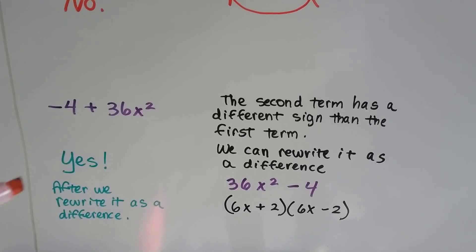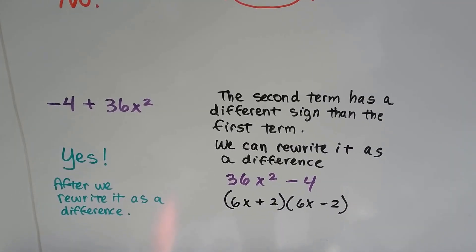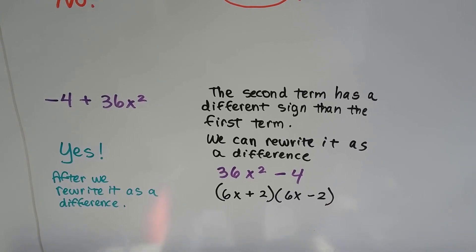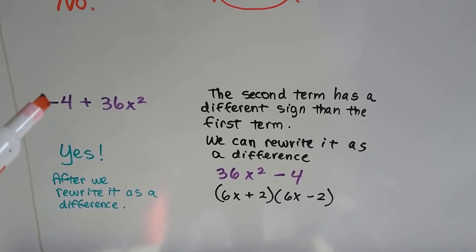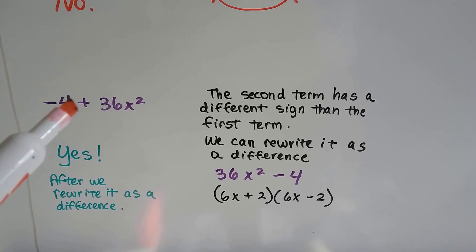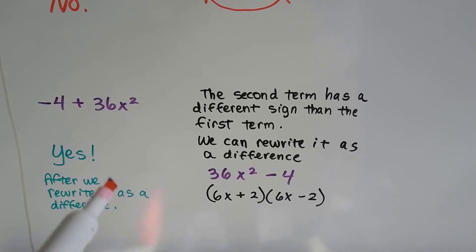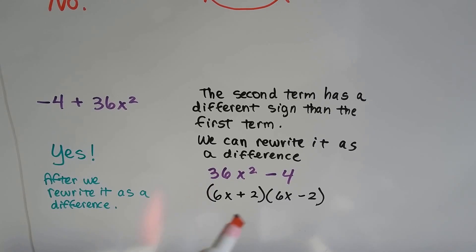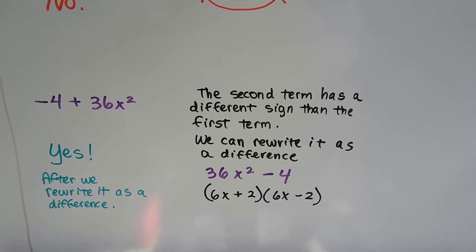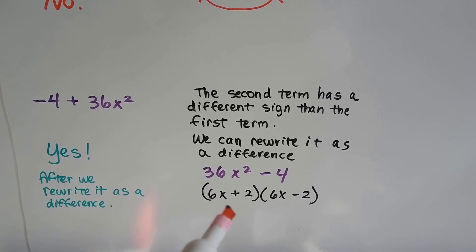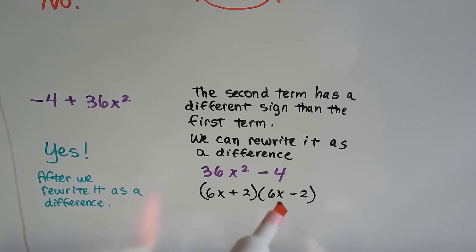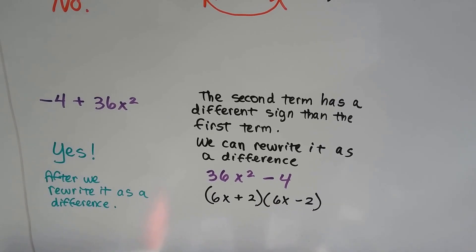Well, now we've got a negative 4 plus 36x squared. Yes, we're going to rewrite it as a difference. So if you have a negative 4 and you're adding 36x squared, we can flip it around to be 36x squared minus 4. That'll give us 6x plus 2 and 6x minus 2. So that one works.